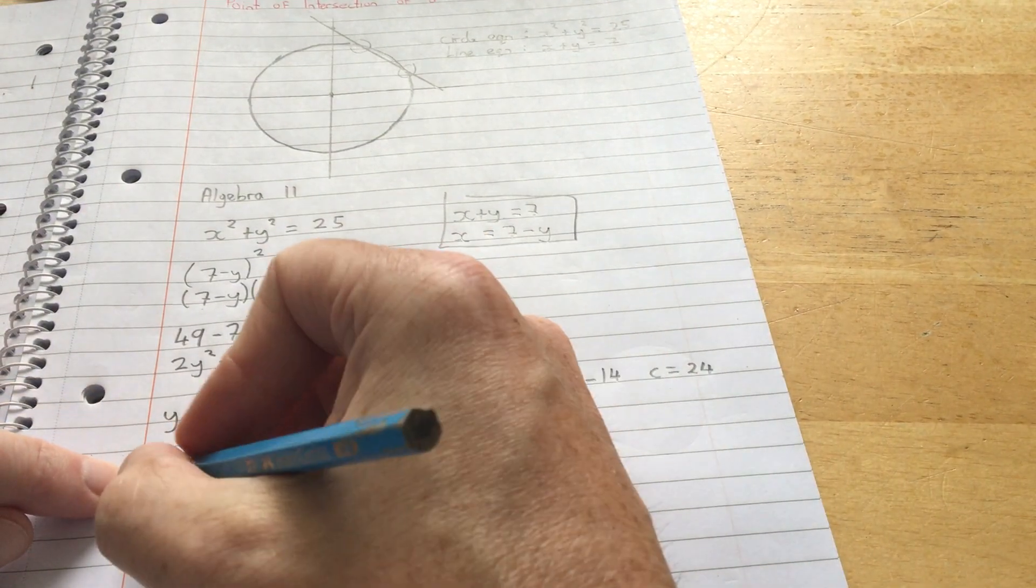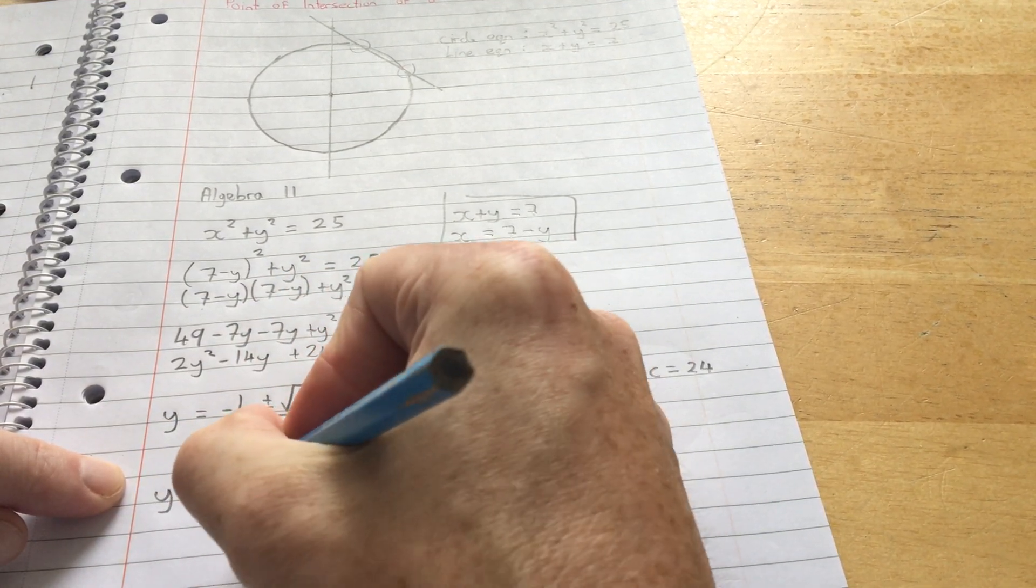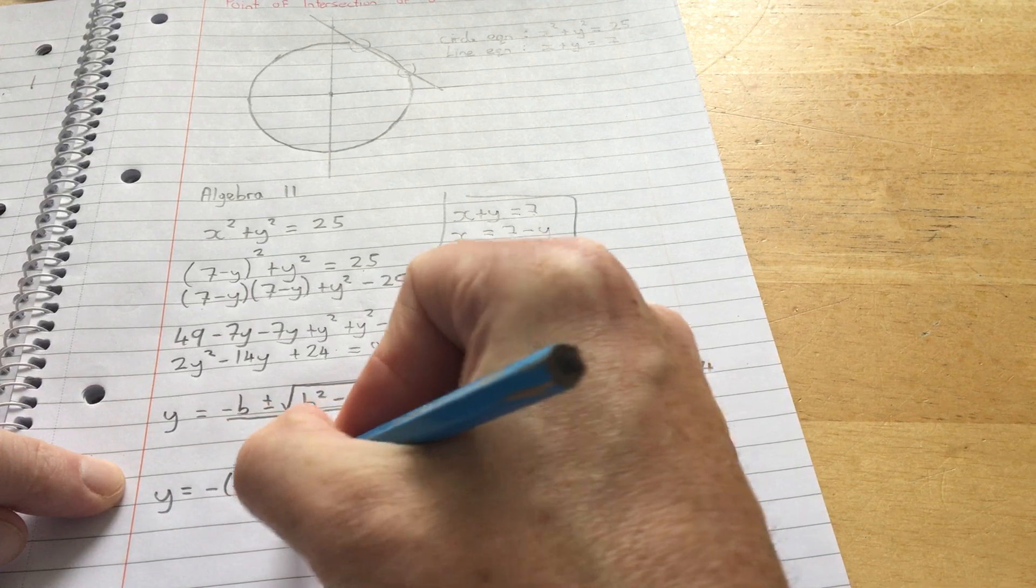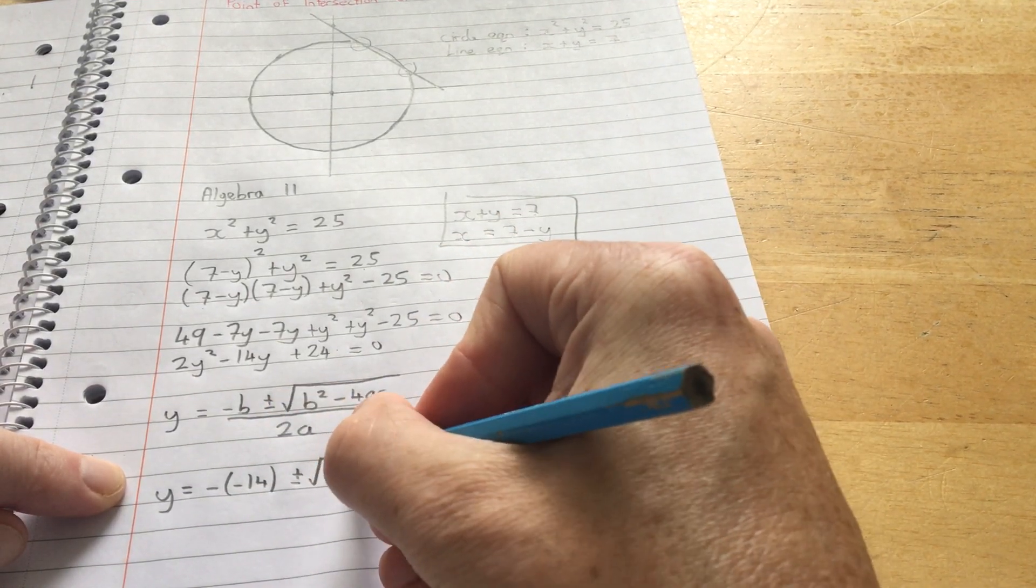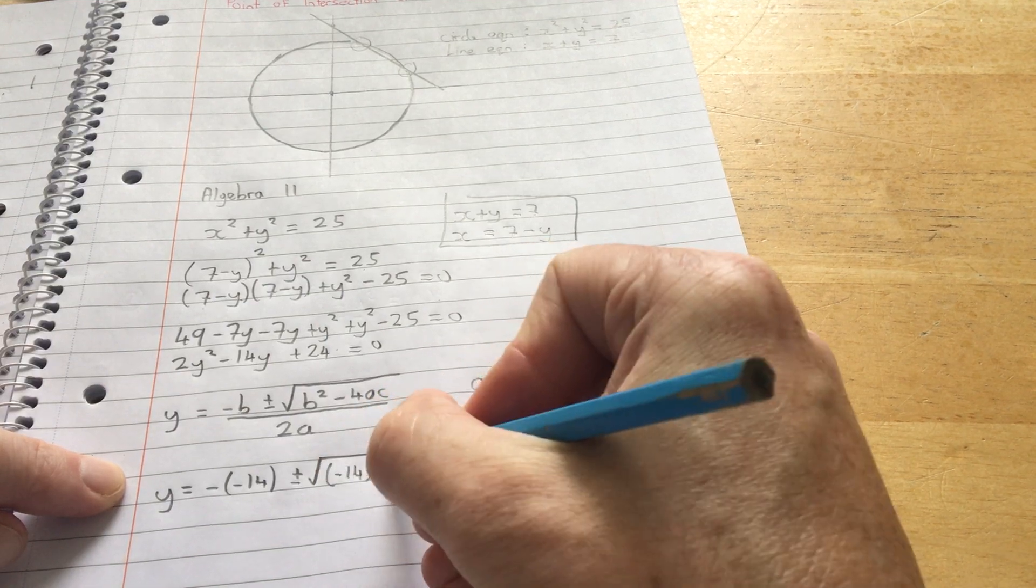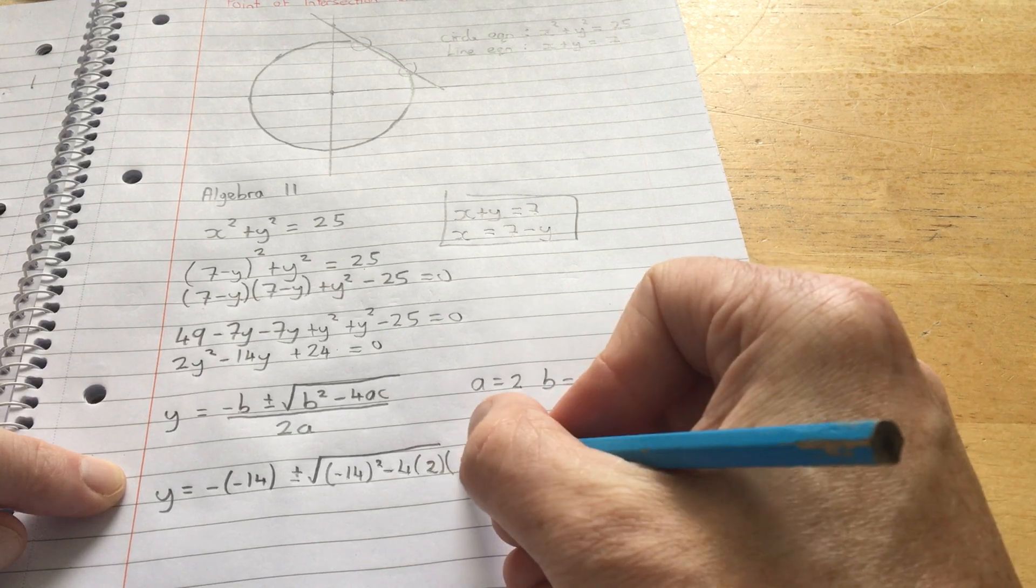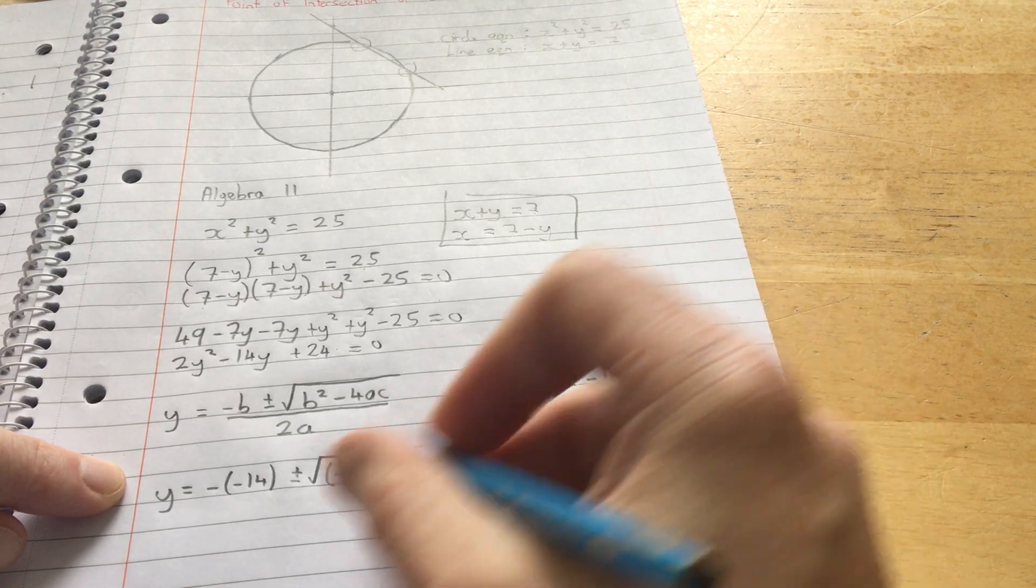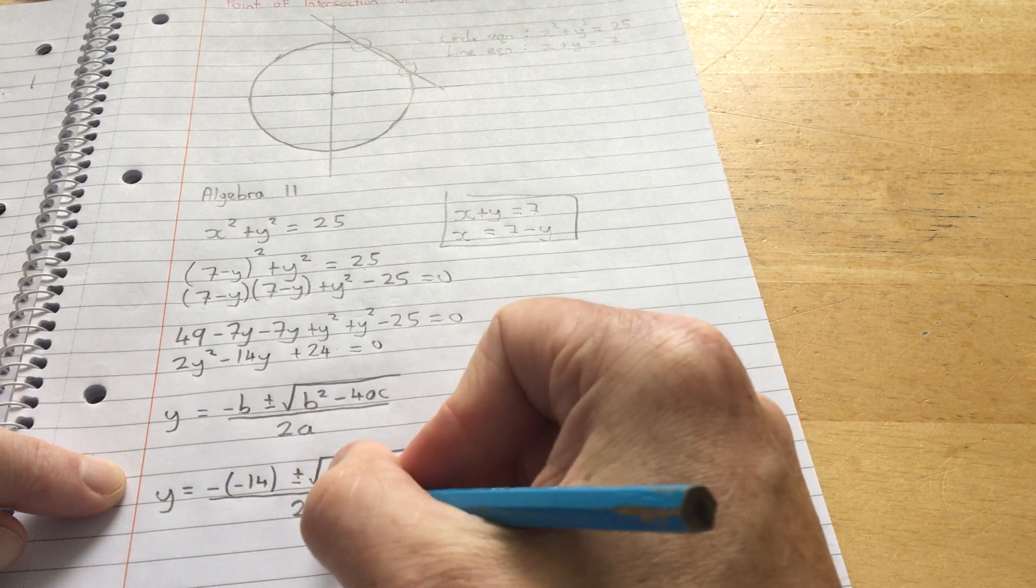Substitute these into the formula now. y equals minus minus 14. It's good practice to put everything around inside brackets. All you have to do is get these substituted in because once you get them substituted in, you can then use your calculator. Minus 4 times a times c. And that's all over 2 times a.